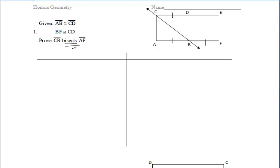Right away I'd be thinking: what do we have to get to in order to prove this bisection? In order to say that that line bisects the segment, we have to somehow say that segment AB is congruent to segment BF. So if we can get that, then we can say that the line bisects segment AF.